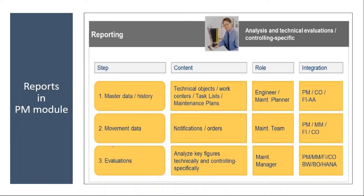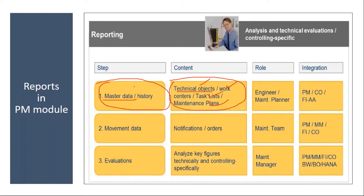Basically, in the plan maintenance module we have three types of reports. The first is master data reports. Master data reports are like your technical objects reports — technical objects such as functional location and equipment. Then work center reports, and preventive maintenance-related ones like task lists and maintenance plans. All these come under master data reports. We will go to the system and see how to execute a report.